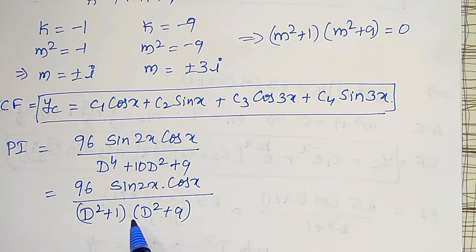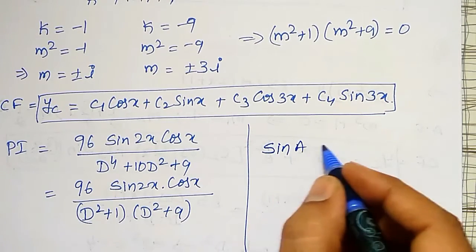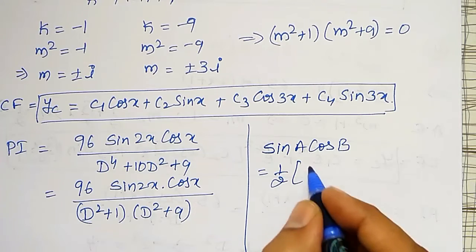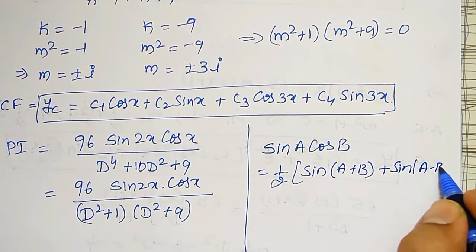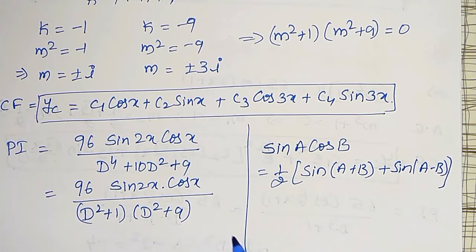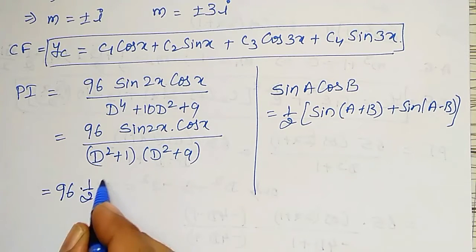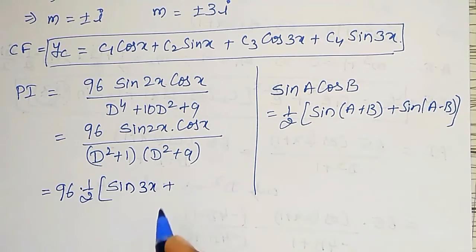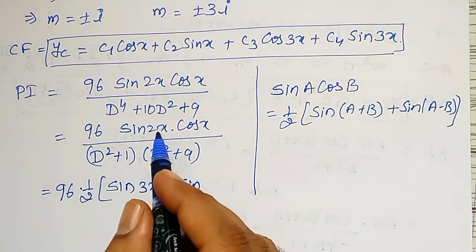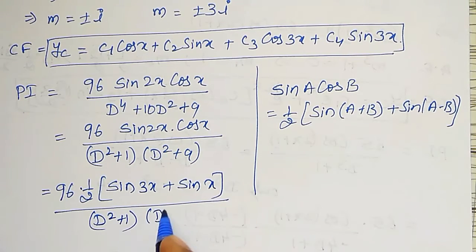I will convert the product into a sum using the formula: sin A into cos B equals one-half times sin(A+B) plus sin(A−B). Here A is 2x and B is x. Therefore the numerator becomes 96 times one-half times sin 3x plus sin x, and the whole expression is divided by d squared plus 1 into d squared plus 9.